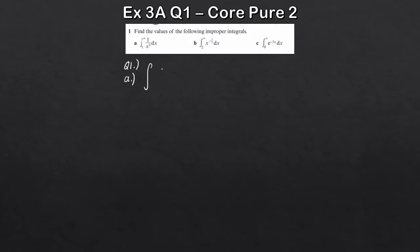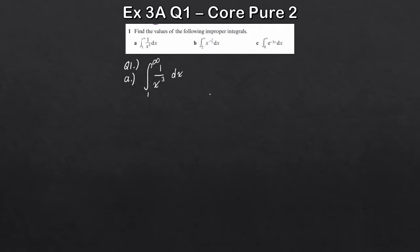We're integrating 1 over x cubed between 1 and infinity. What we do here is replace infinity with a variable — we usually use t. Then we consider doing the integration, substituting our t and the lower limit. So we're taking the limit as t tends to infinity. Infinity becomes t, and 1 over x cubed is just x to the minus 3 dx.